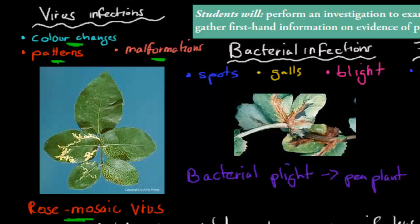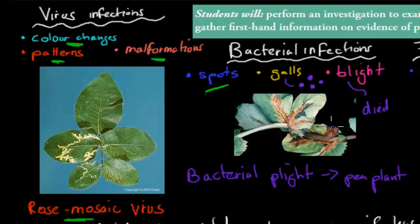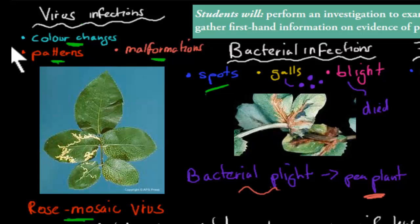Bacterial infections usually have different characteristics. First of all, they can have spots on the actual leaves — that is often a sign of a bacterial infection. They can have something called galls, which are these little bumps you might have noticed sometimes on your leaves. And a blight — what that means is basically that parts of the actual leaf itself have died off. You can see the brownish parts here; those parts have died off, and that's what we consider blight. An example is a bacterial blight that affects pea plants. You can see parts dying due to a bacterial infection, which means the plant itself will eventually die as well.